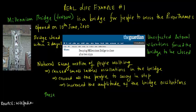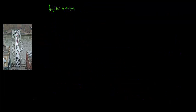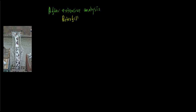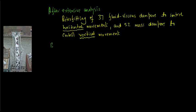These vibrational modes had not been anticipated during the design of the bridge. After extensive analysis, the following solution was proposed: the retrofitting of 37 fluid viscous dampers to control horizontal movement and 52 mass dampers to control vertical movement.